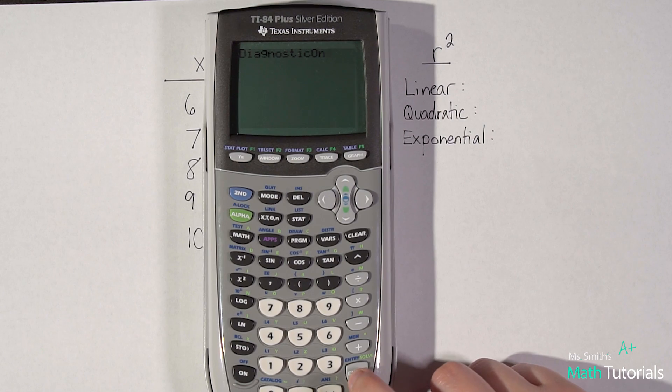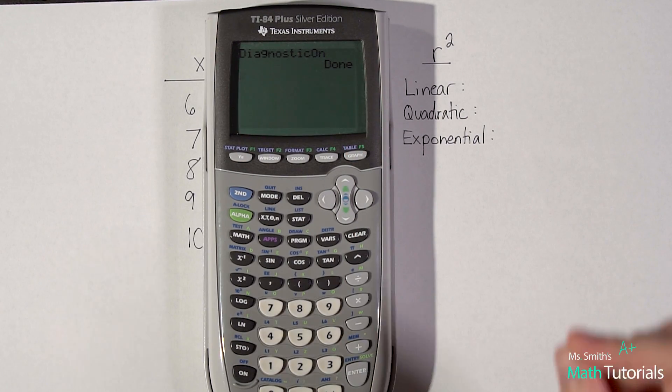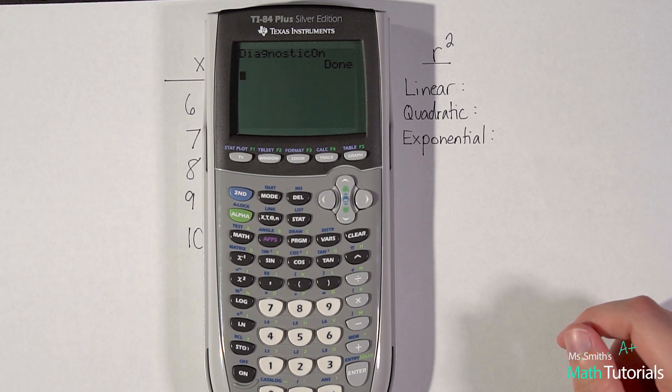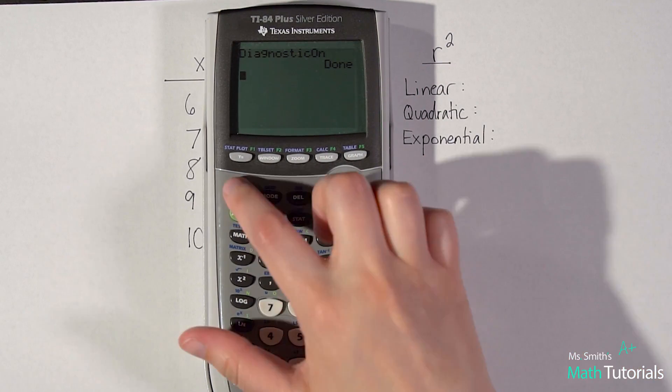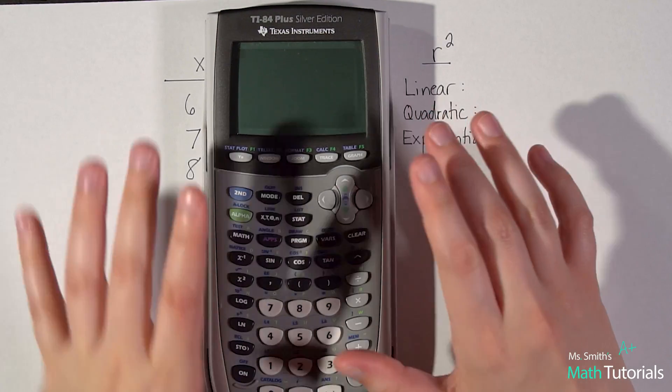You'll see diagnostic off or diagnostic on, we want to turn it on. So just hit enter. It'll say diagnostic on, hit enter, done. Anytime you clear your calculator, if you're wanting to know R squared data, you're going to have to make sure that diagnostics back on. So remember how to do that. At this point, it's on.